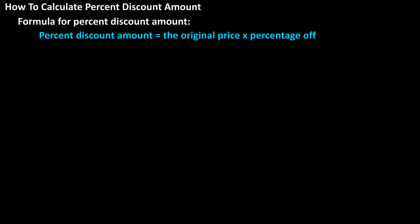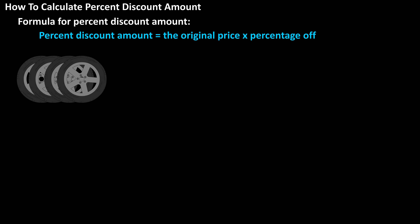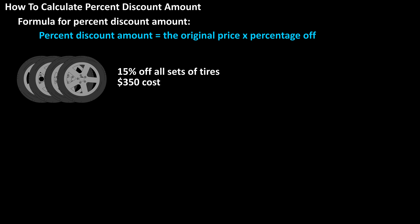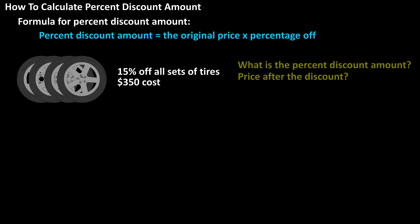As an example, let's say that you need to buy some new tires and a tire store is having a 15% off sale for all the sets of tires in the store. You find a set of tires that you like that cost $350. What is the percent discount amount, and what is the price of the tires after the discount?